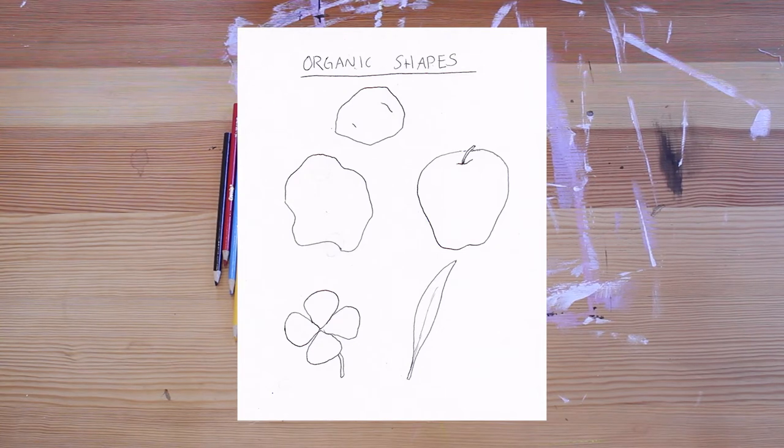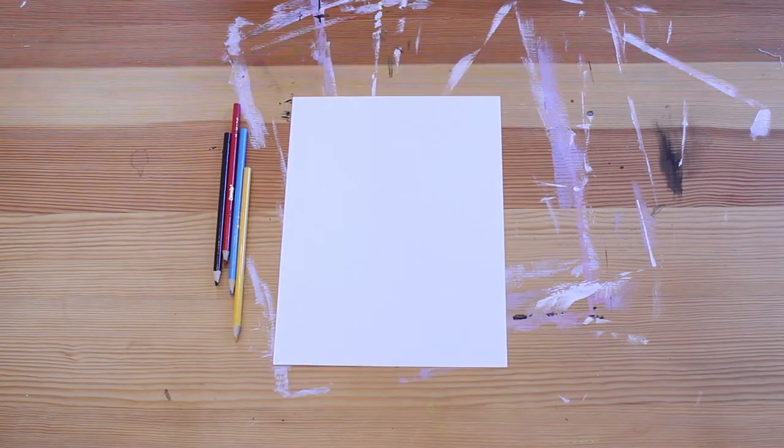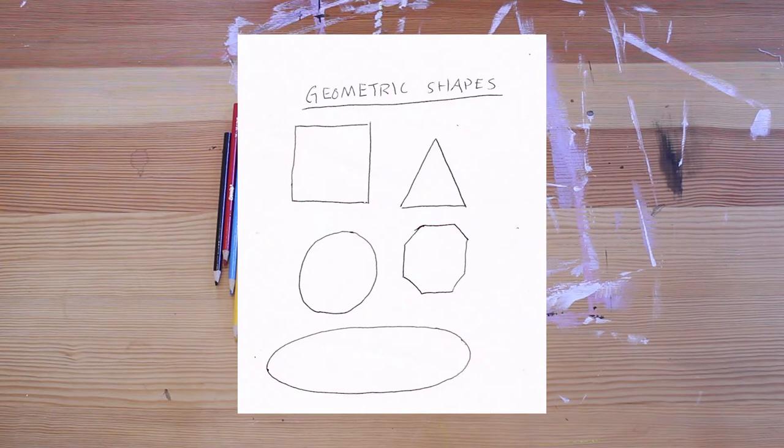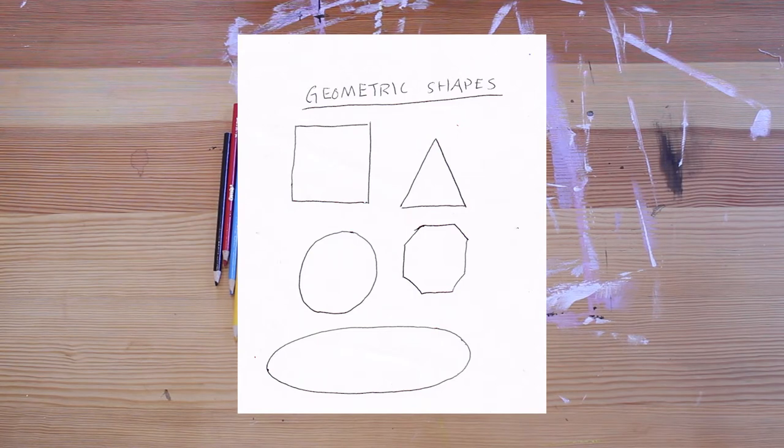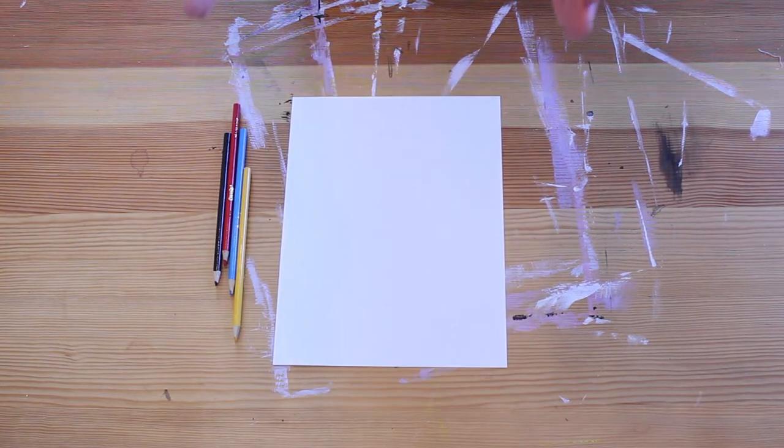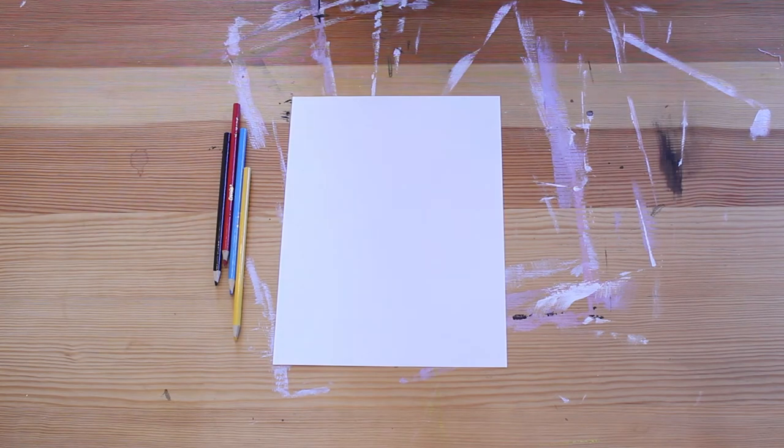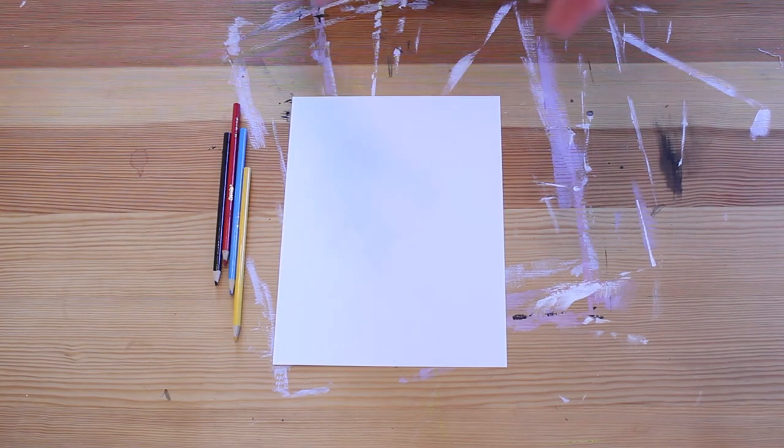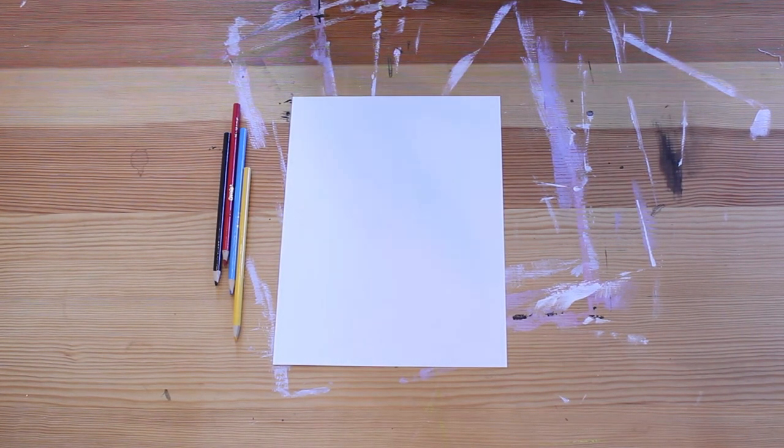whereas inorganic, sometimes also called geometric shapes, are ones that are not natural. They're human made and they tend to feature a lot of really straight lines, a lot of angles. Think of just the regular primary shapes like squares, circles, triangles.